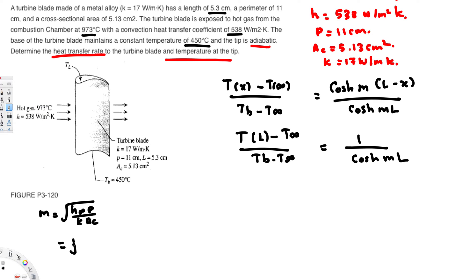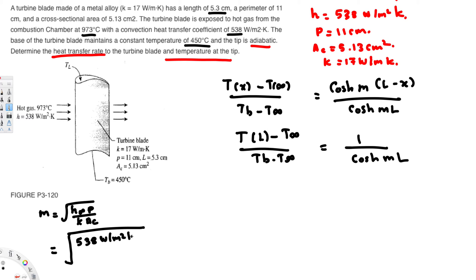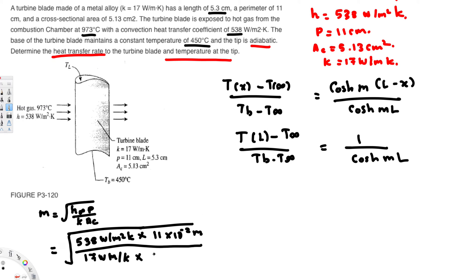Plugging in the values: M equals square root of (538 times 11 times 10 to the power of minus 2, divided by 17 times 5.13 times 10 to the power of minus 4). The perimeter is converted to meters and the area to meters squared. Calculating this gives M equals 82.376 meters to the power of minus one.